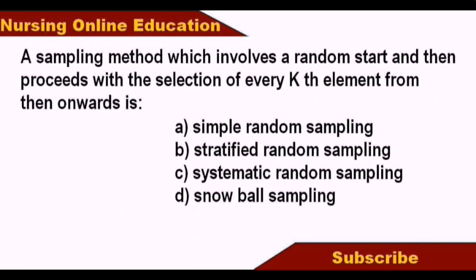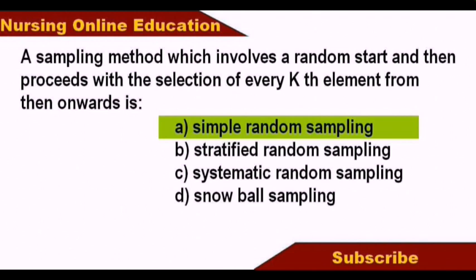Simple random sampling is just a group where all of them have a chance. If you have 250 members, you can assign a number and each sample has a chance to be selected. That is simple random sampling.